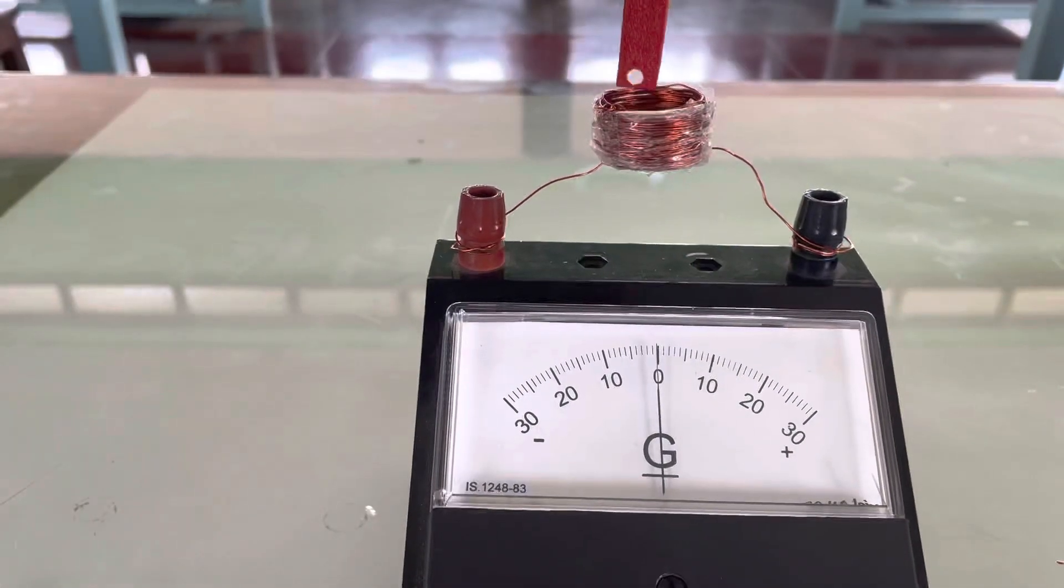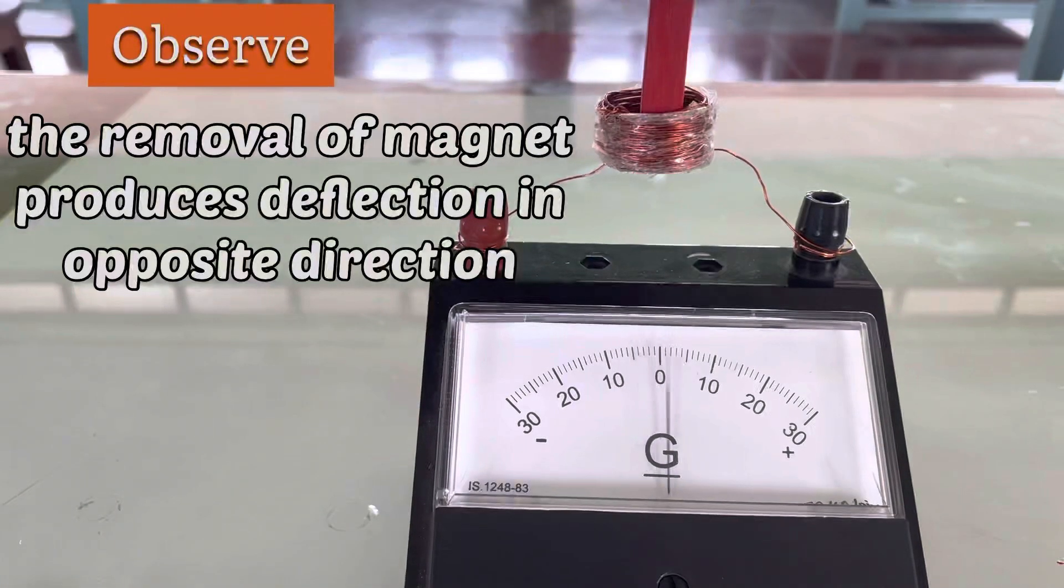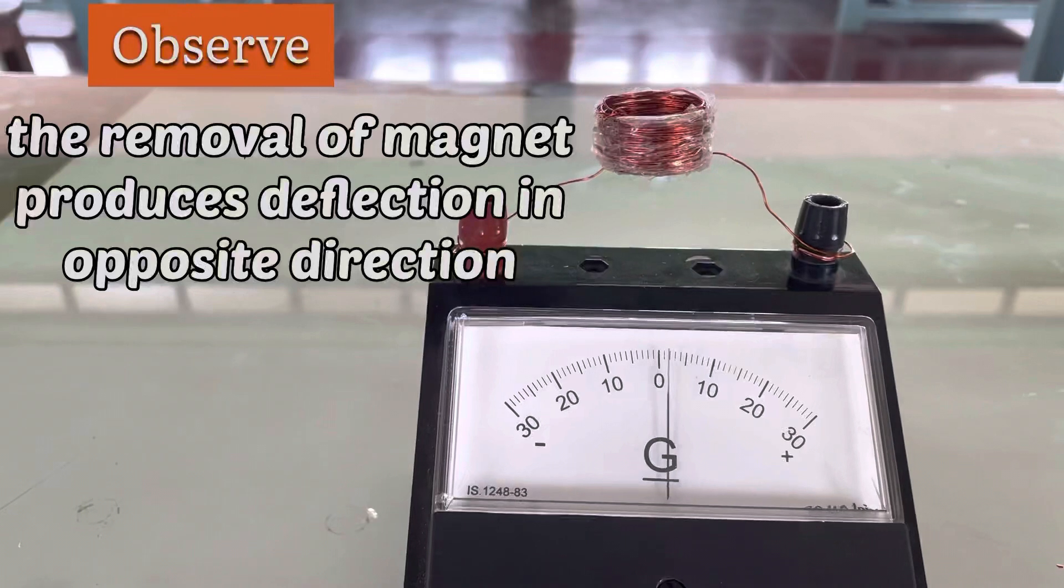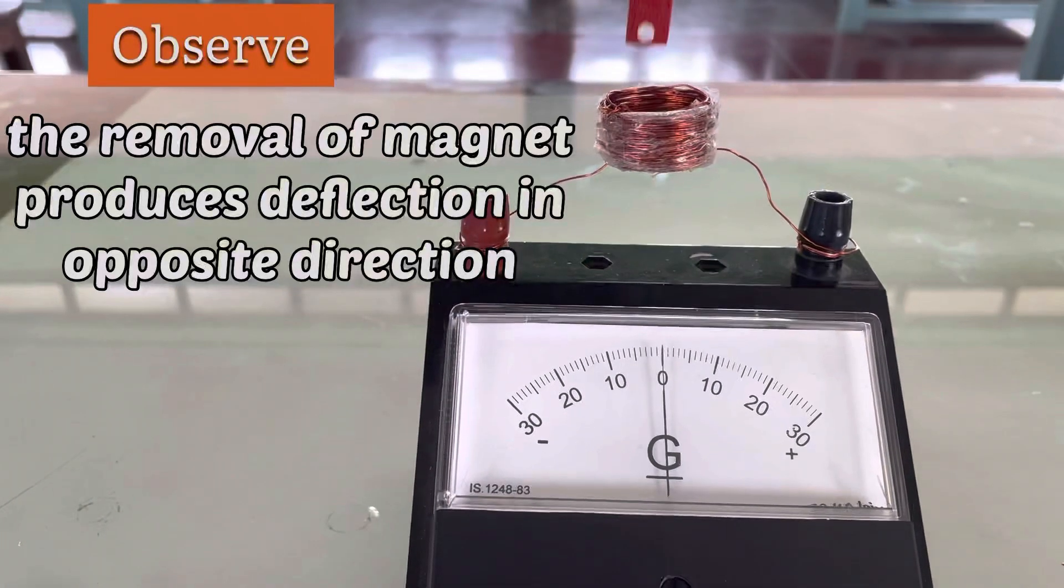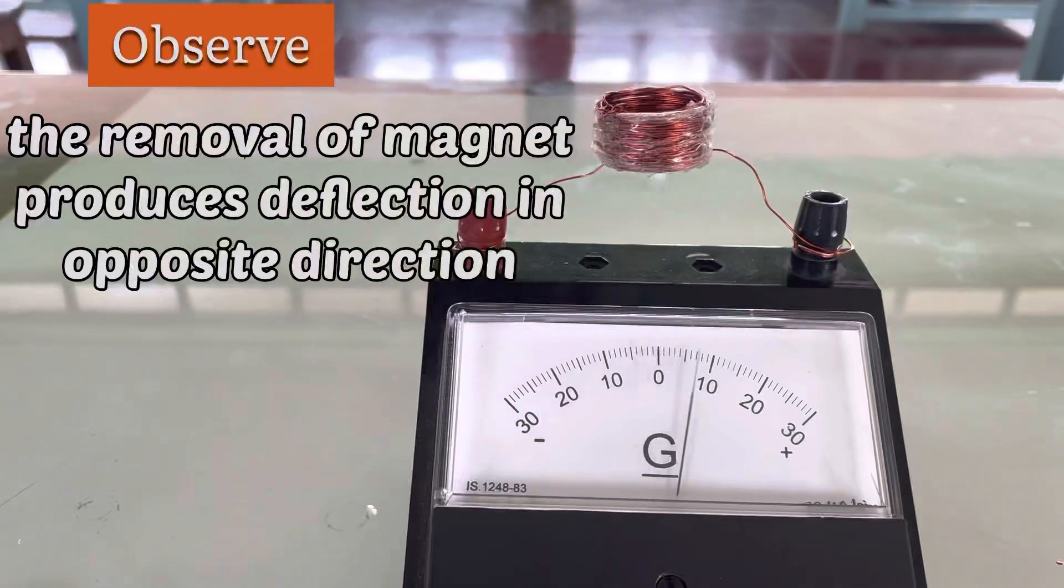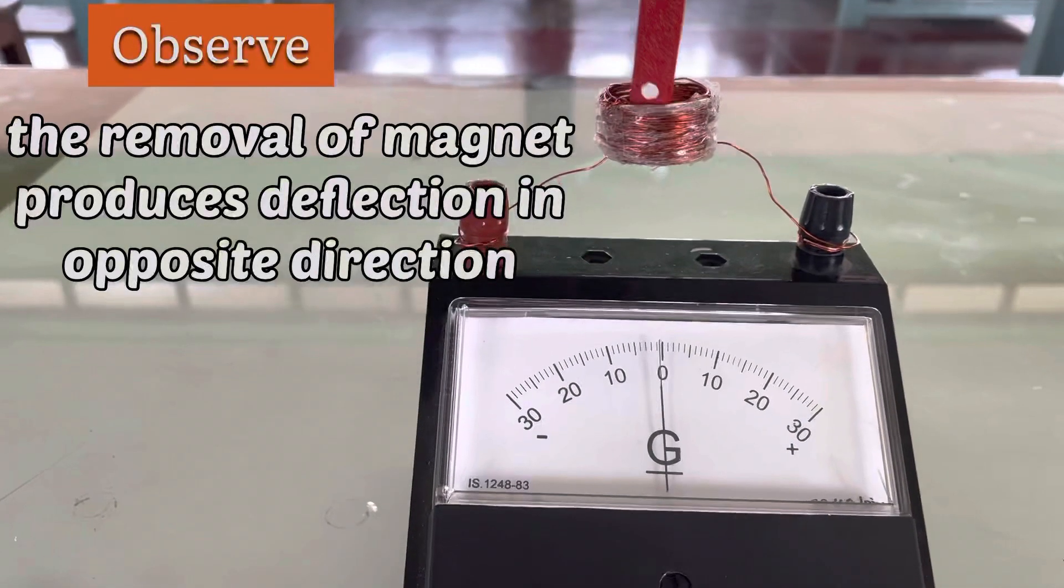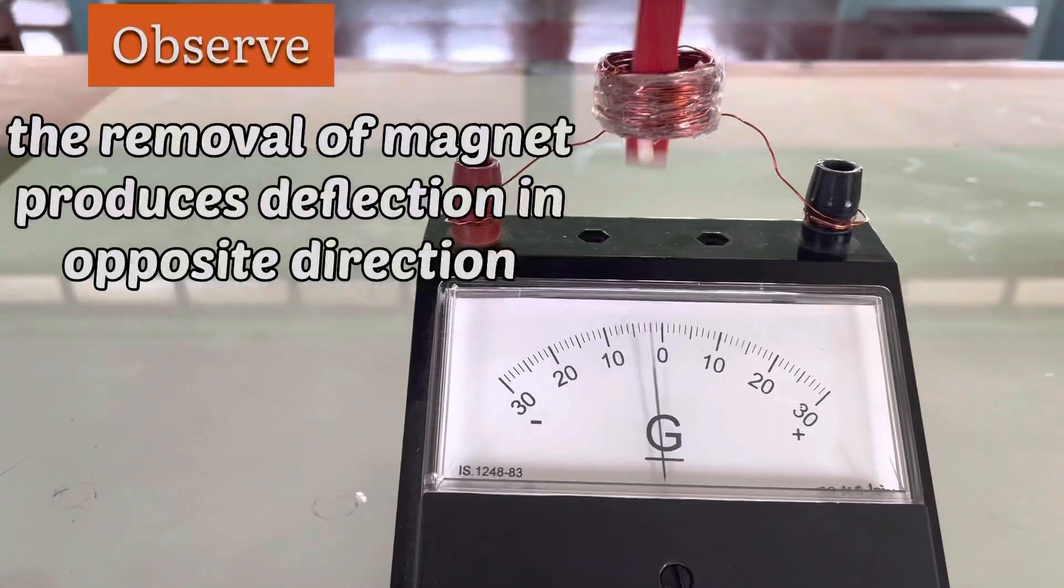Also observe the direction of deflection in the galvanometer when the bar magnet is removed. The directions of deflection when the bar magnet is introduced and when the bar magnet is removed are exactly in opposite directions.